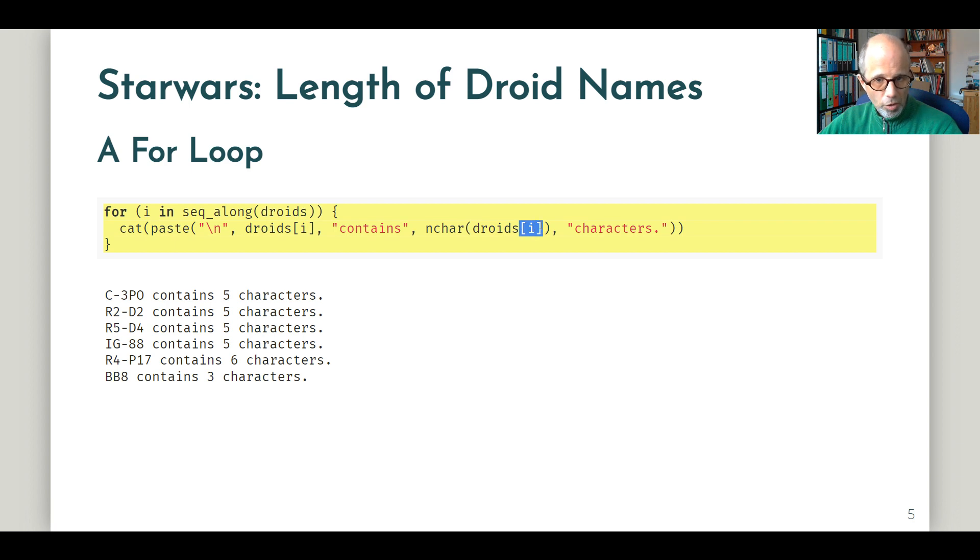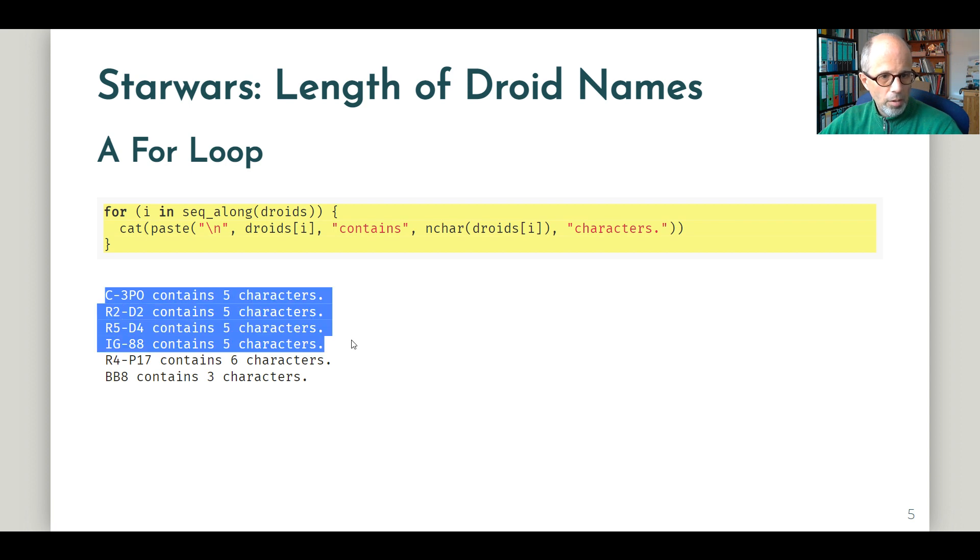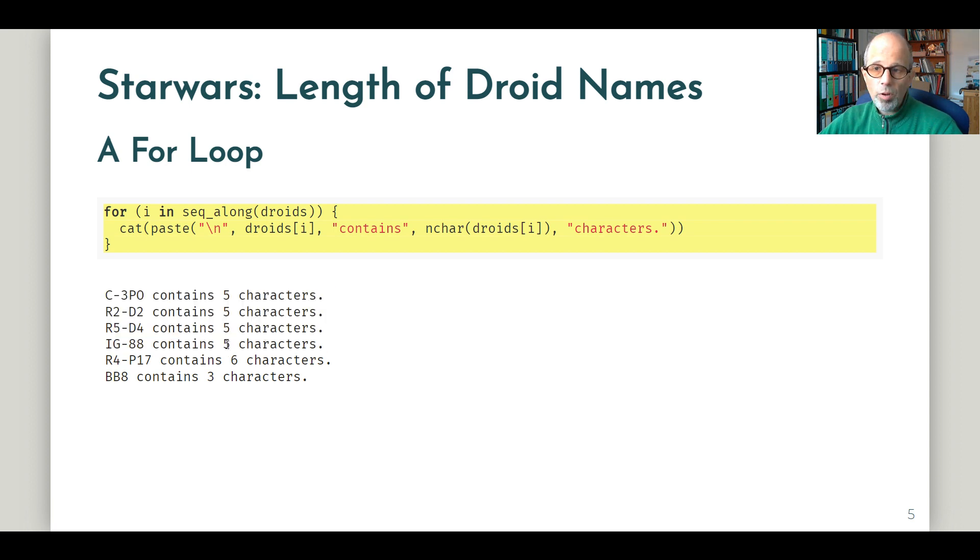The first four droids, their names all comprise five characters, and then we have one with six characters and one with three characters.